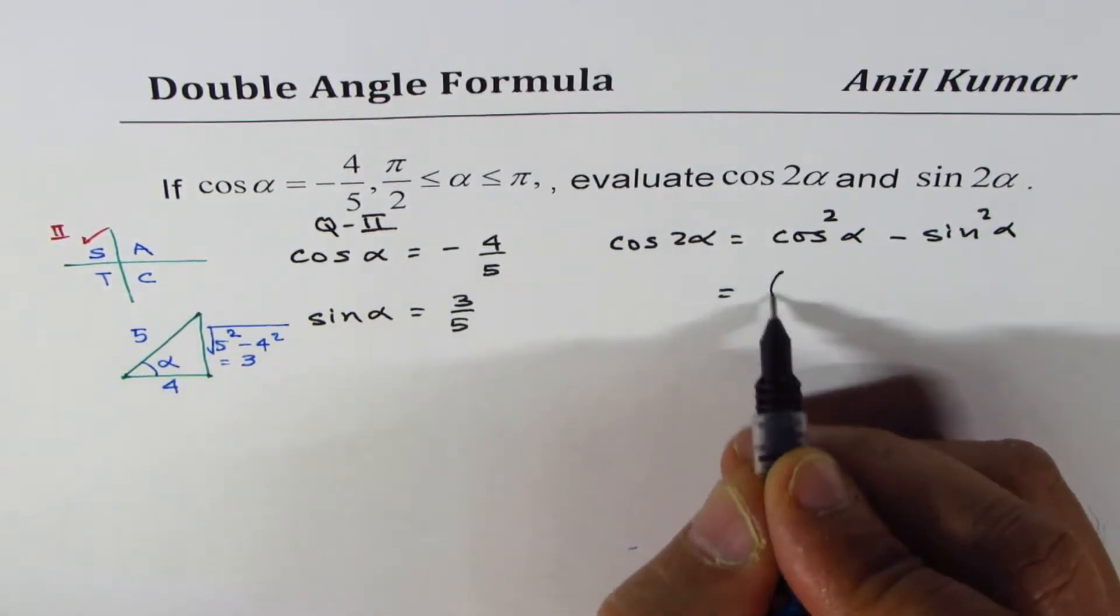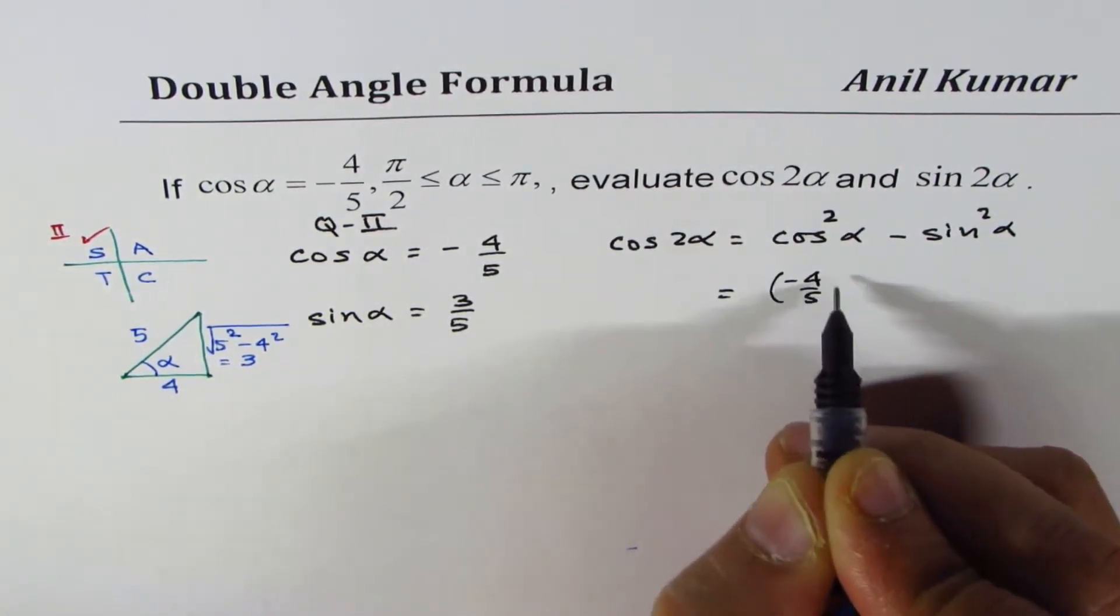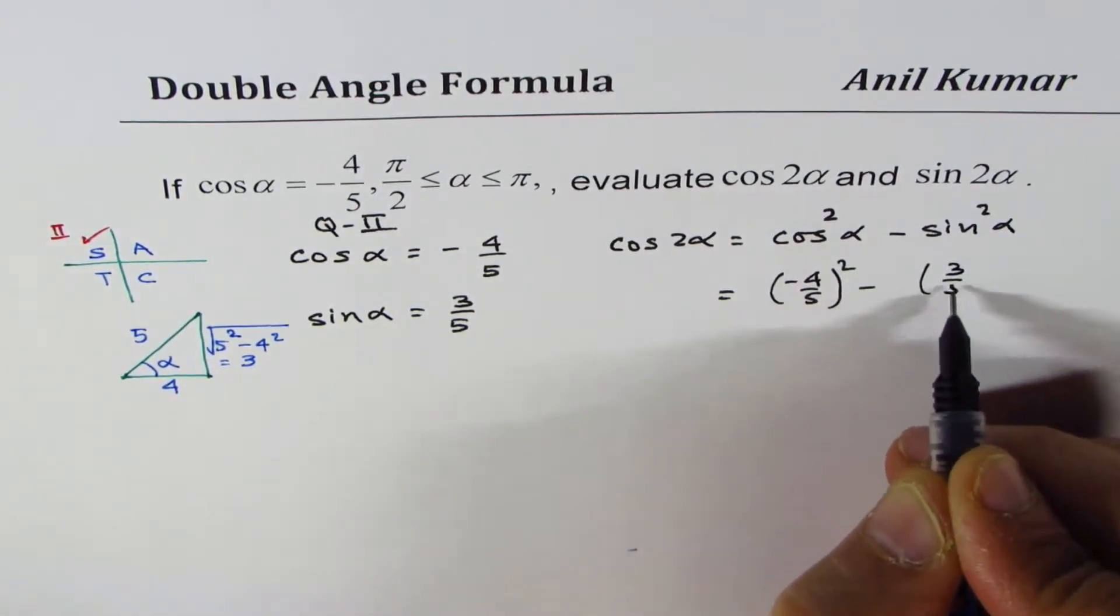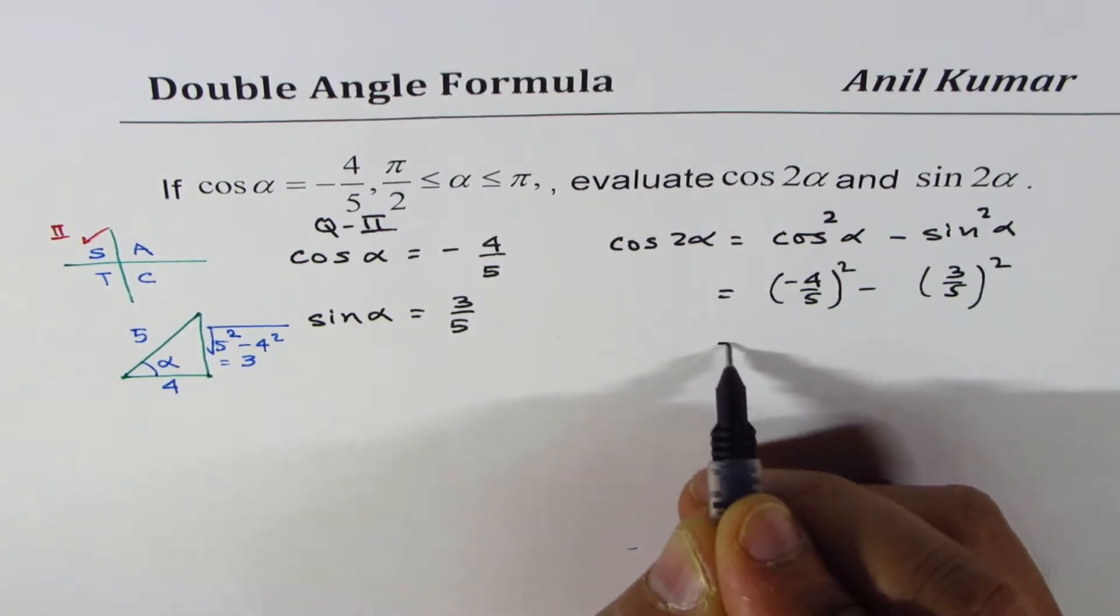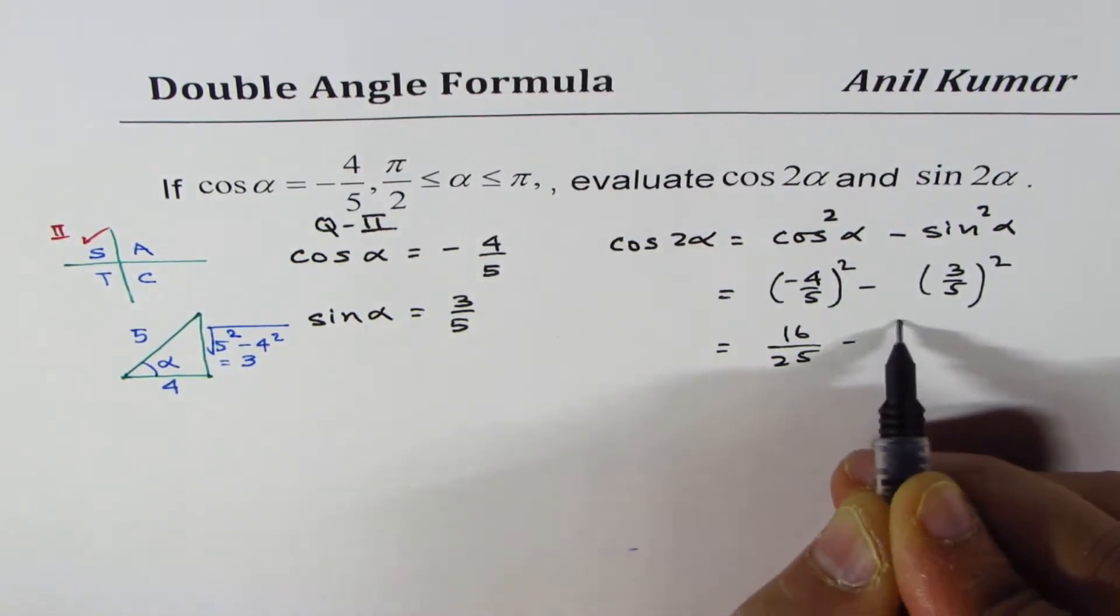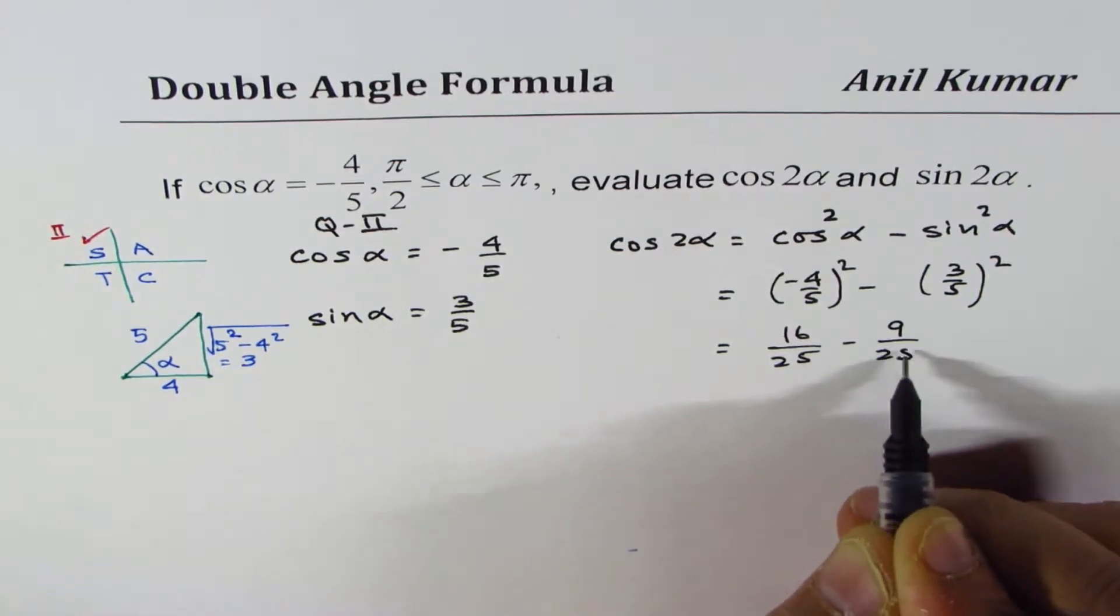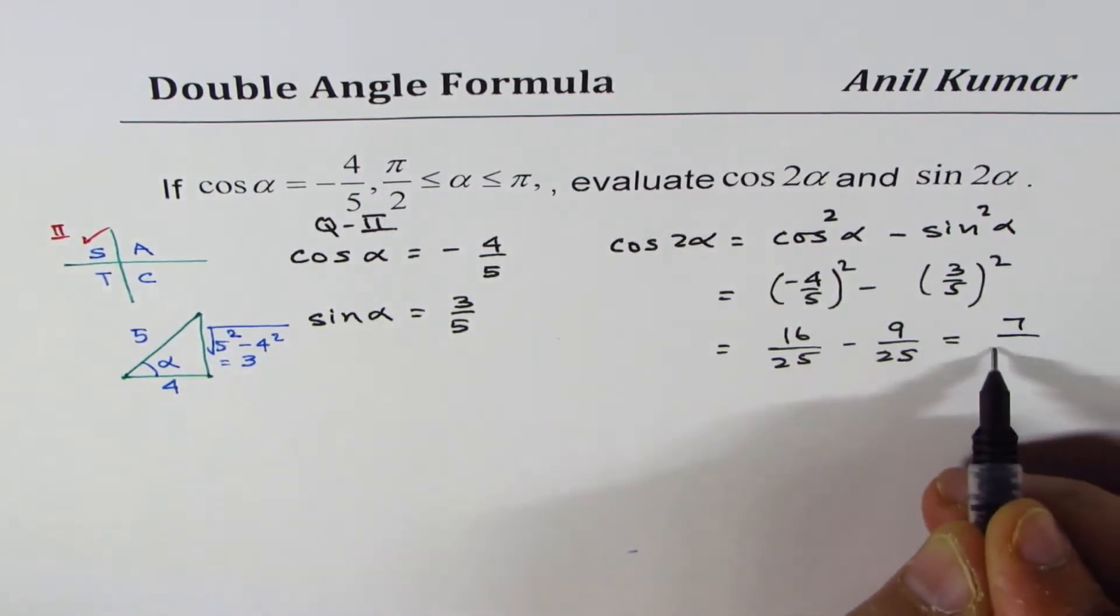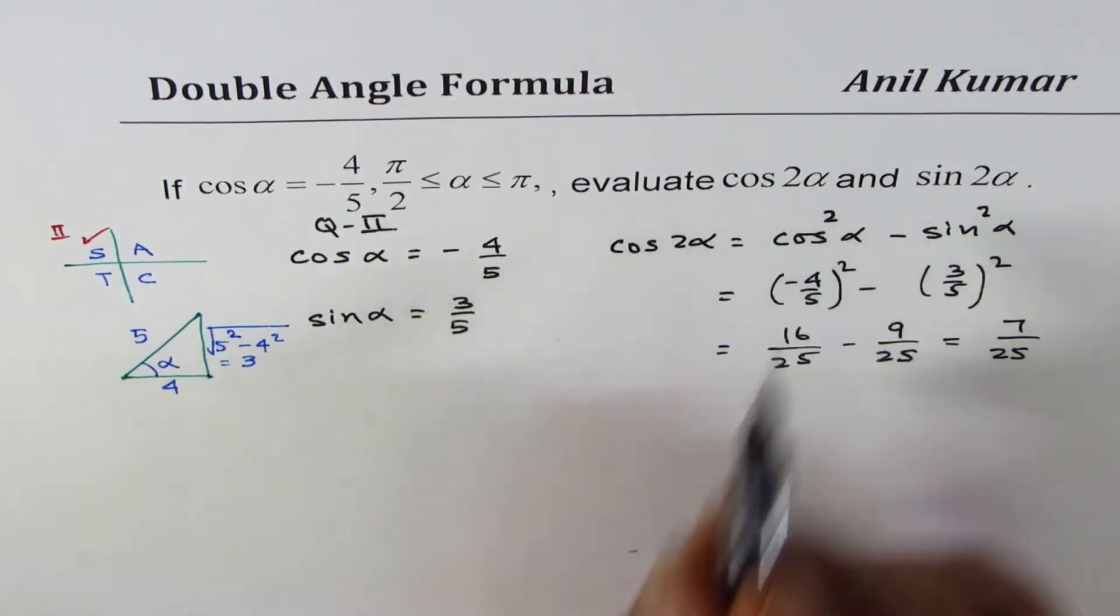Cos square alpha is minus 4 over 5, square that, minus sine is 3 over 5, square that, and that gives you 16 over 25, minus 9 over 25, and 16 minus 9 is 7, so we get 7 over 25, for cos 2 alpha.